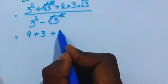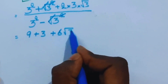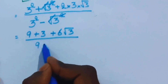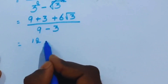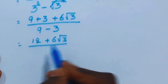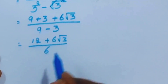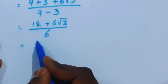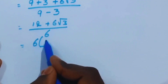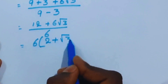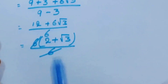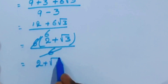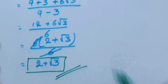Now we have 9 plus 3 plus 6 times square root of 3, divided by 9 minus 3. So 9 plus 3 is 12, giving us 12 plus 6 square root of 3, divided by 6. We take 6 as common: 6 times open bracket 2 plus square root of 3, close bracket, divided by 6. The 6s cancel, and we have 2 plus square root of 3. This is the final answer. Thanks for watching this video.